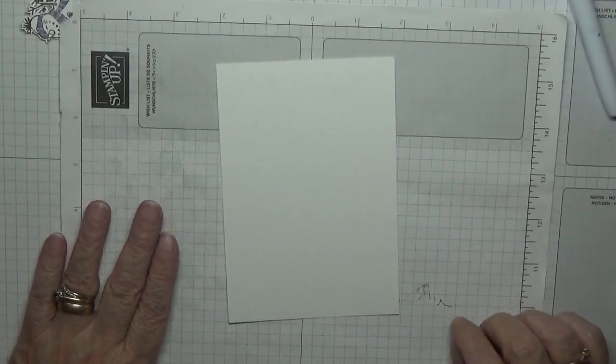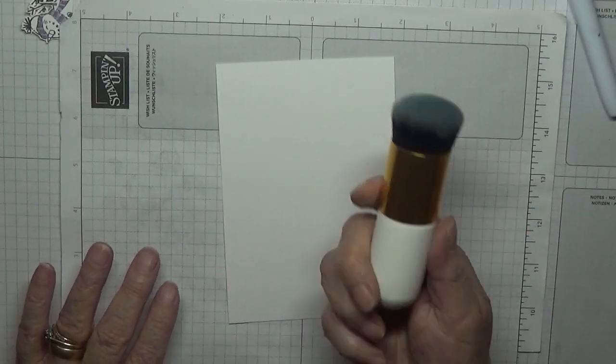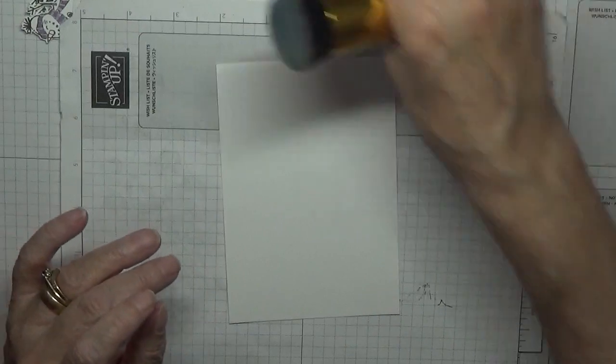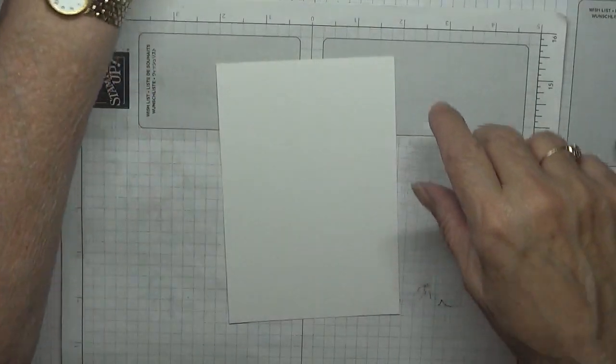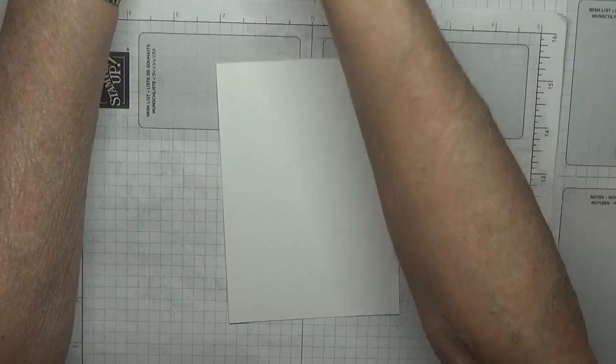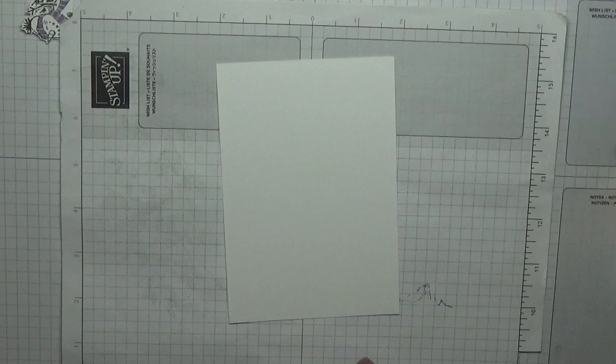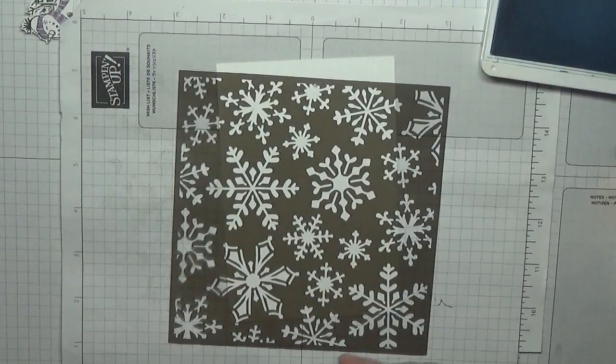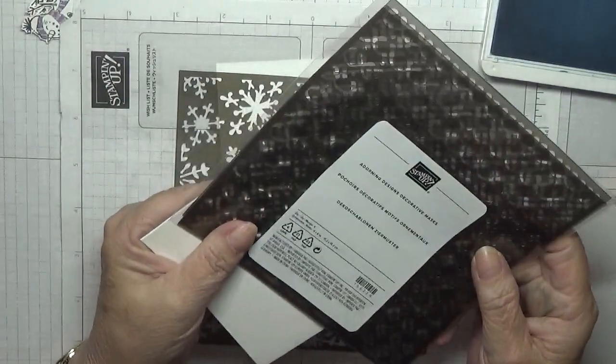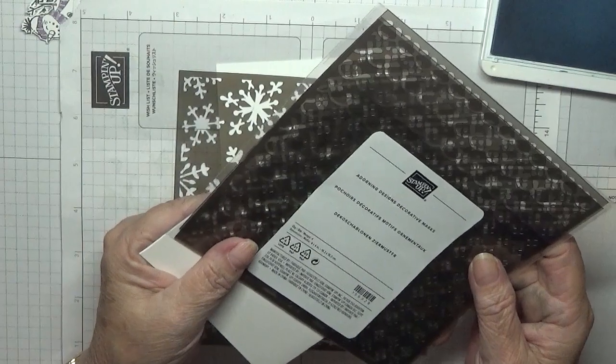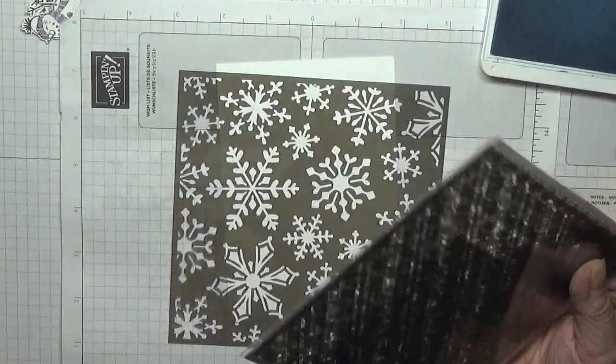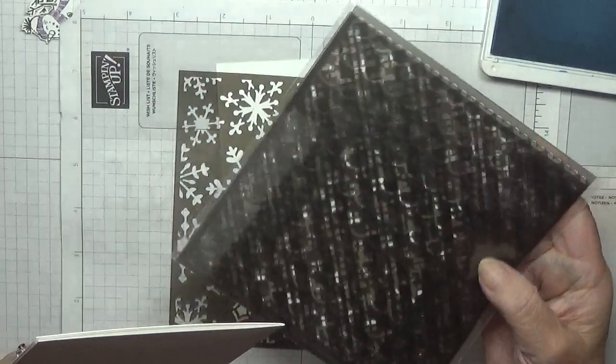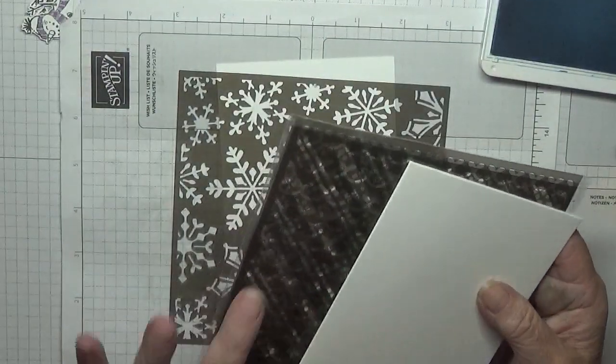Right, this one. What we're going to do is stencil this. I've got my, I'm using one of these brushes today because they're better for stenciling. And some seaside spray ink.